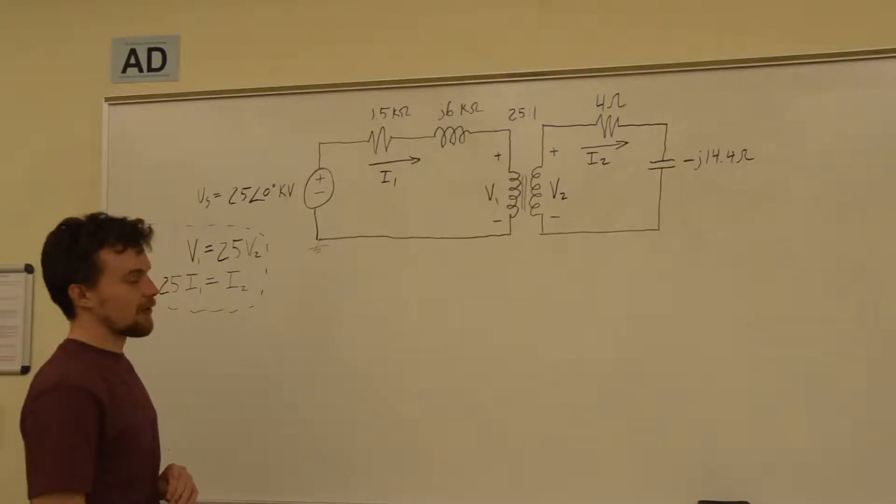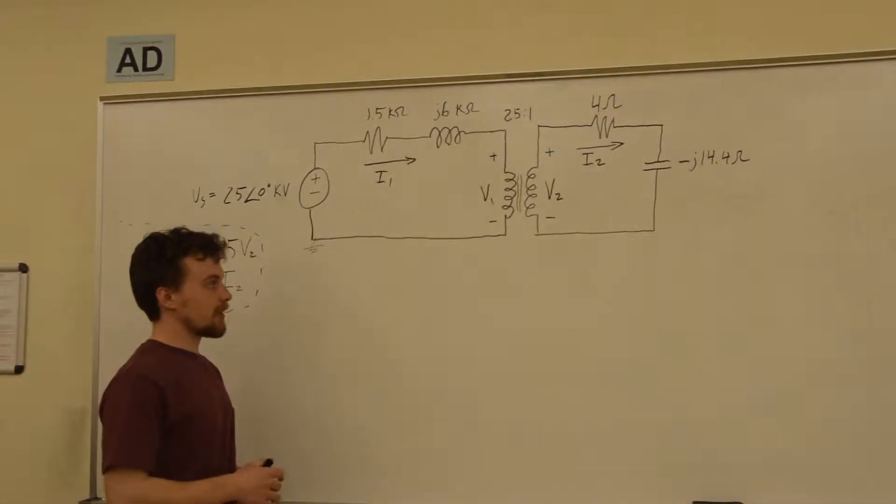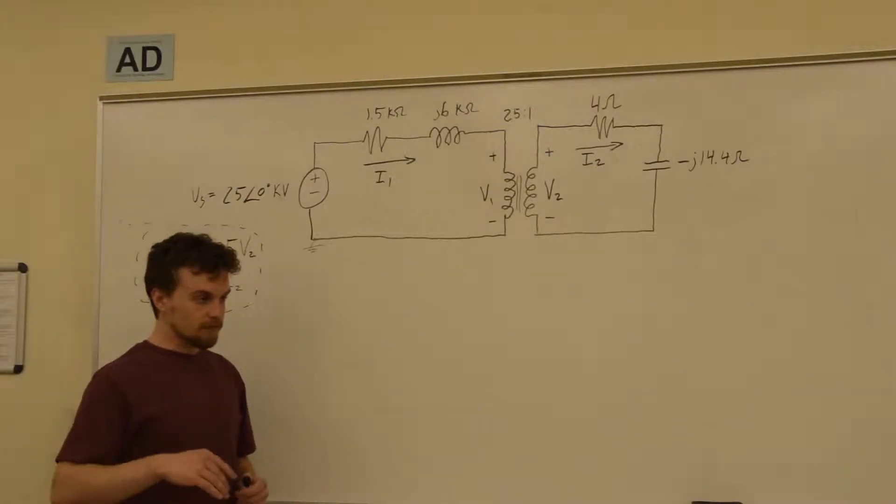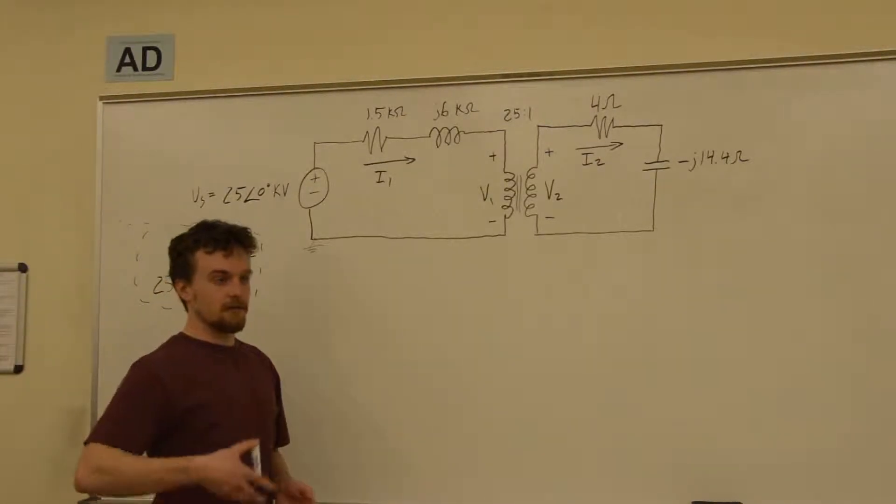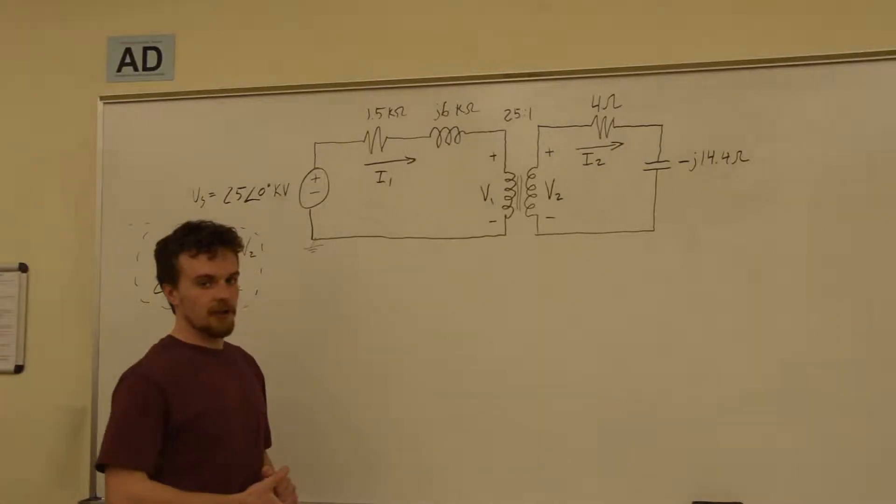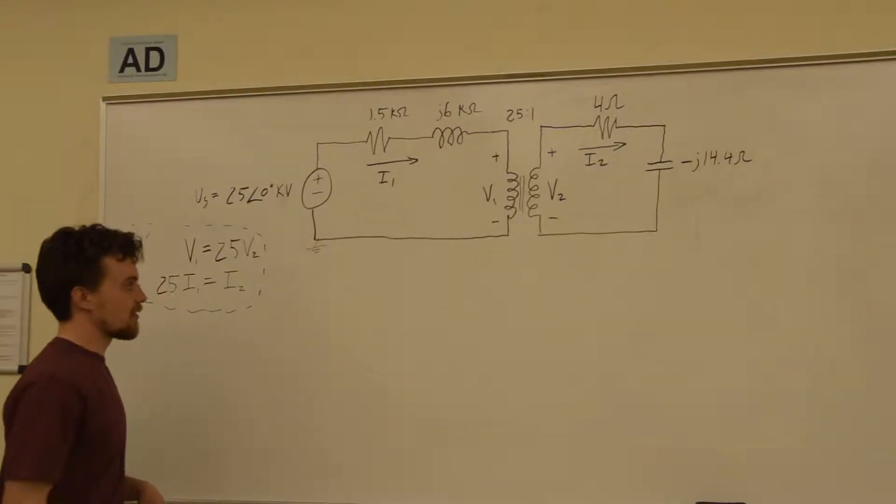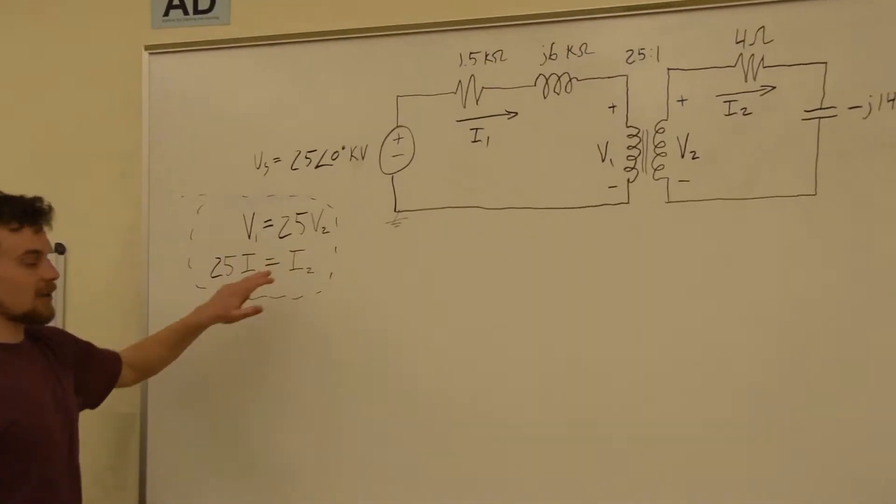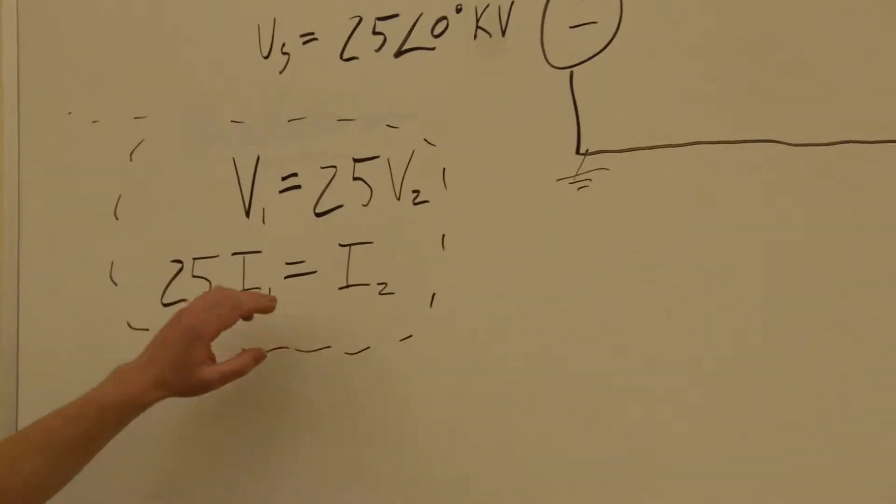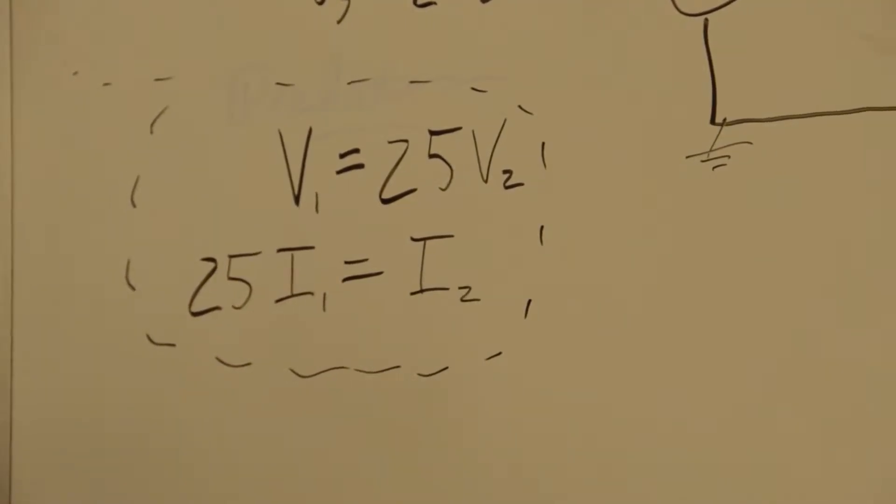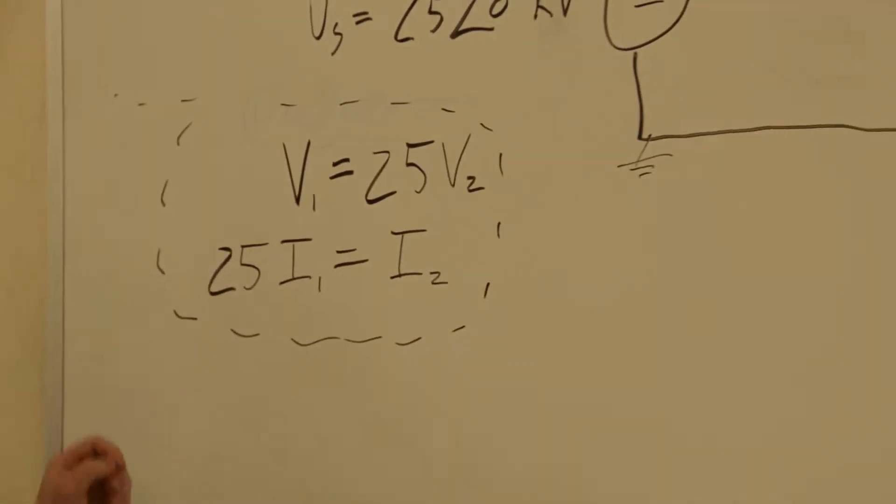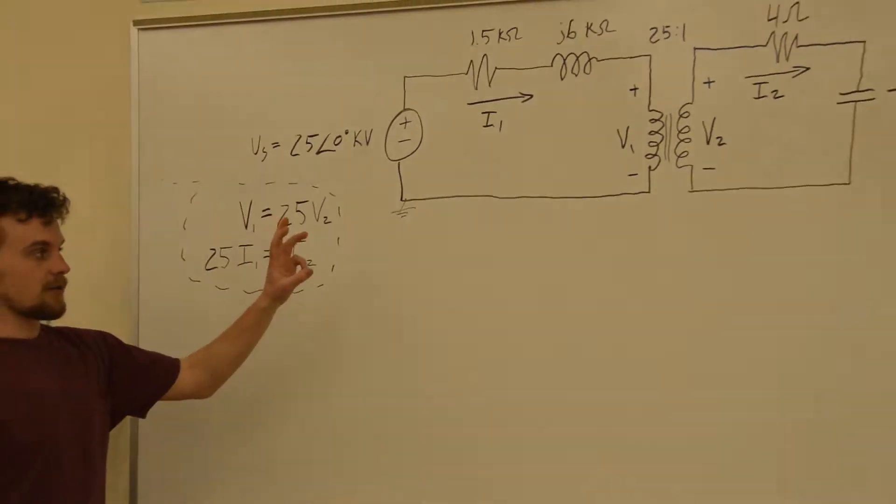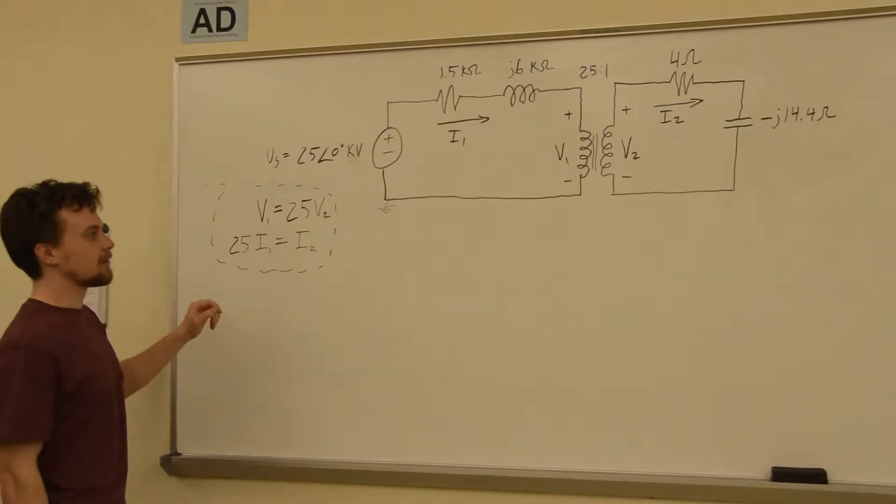The idea of a transformer is that it can take an AC signal or AC voltage and transform it down to a lower voltage, but its behavior is governed by these two equations here because an ideal transformer doesn't use any power, so that means power is conserved on both sides of it.